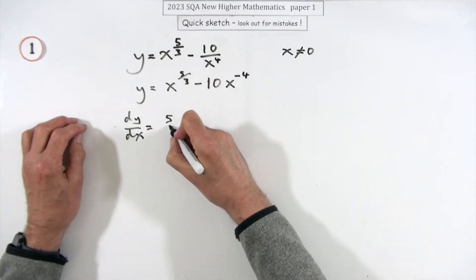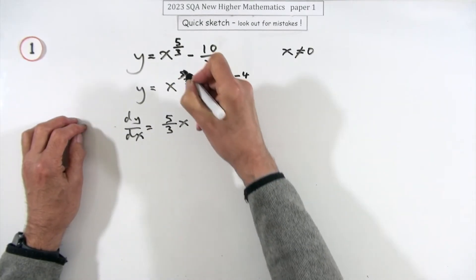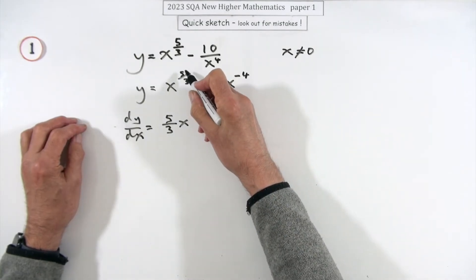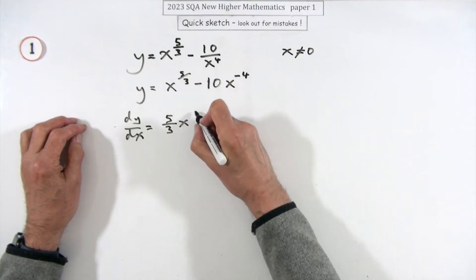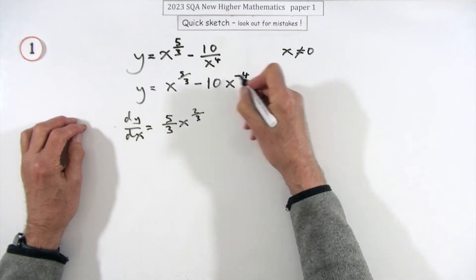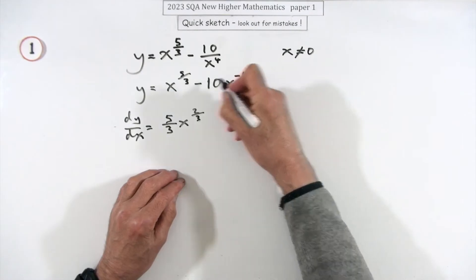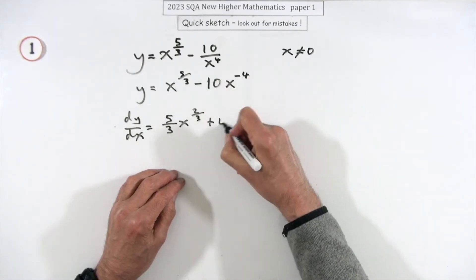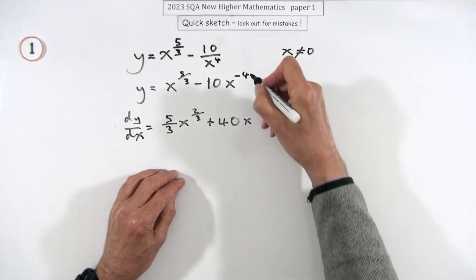Simple: multiply by the power five upon three, take one off the power. Now one is three thirds, so if you take three bits away from the five there'll only be two bits left. Next one, multiply by the power, you could just do that in one go: negative times negative, positive four tens, 40.